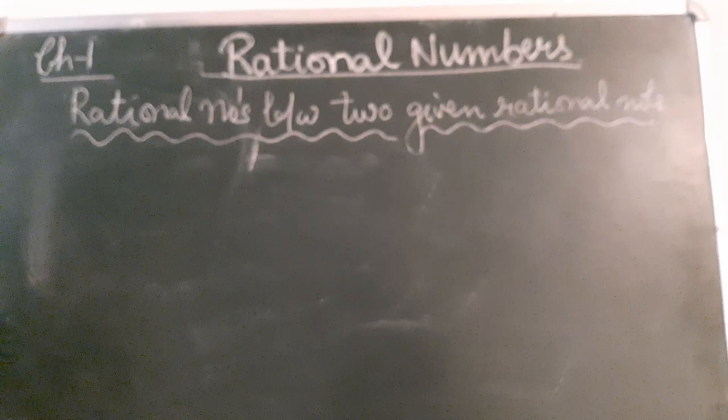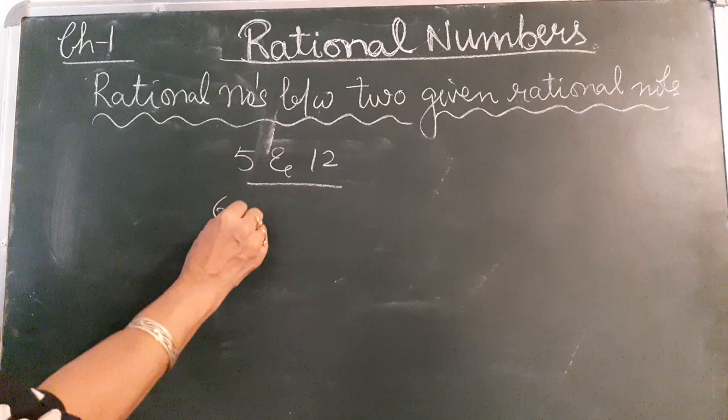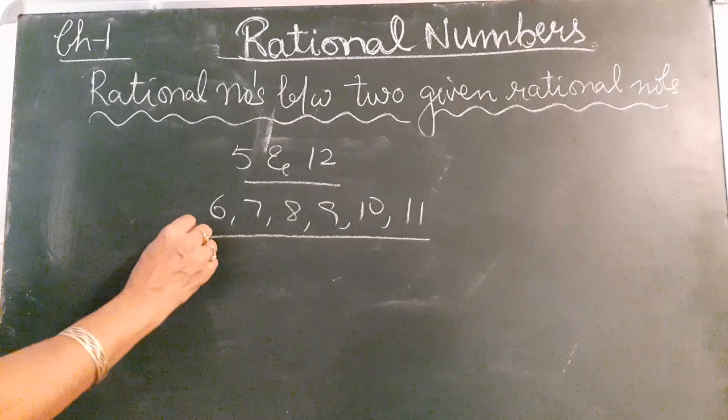First of all, if anybody asks you to find out the numbers between natural numbers 5 and 12, then you will give the answer 6, 7, 8, 9, 10, 11. These are 6 numbers — a limited number of values.